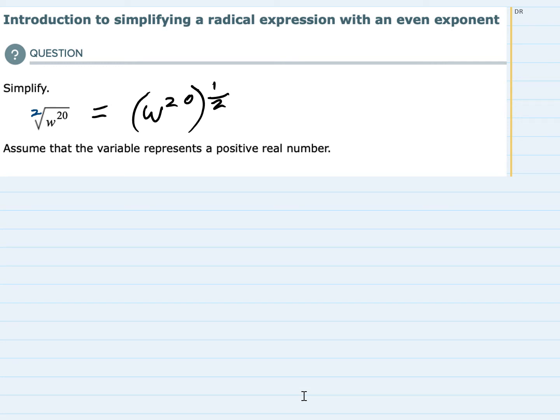If this were a cubed root it would be to the one-third power and so on. And what this does is this turns this into a situation where we have a power being raised to a power. And we know that when that happens we can keep the variable w and we would multiply the exponent inside the parentheses with the exponent outside the parentheses.